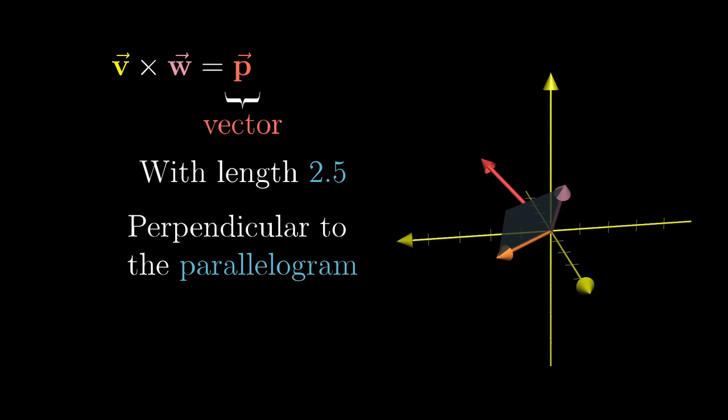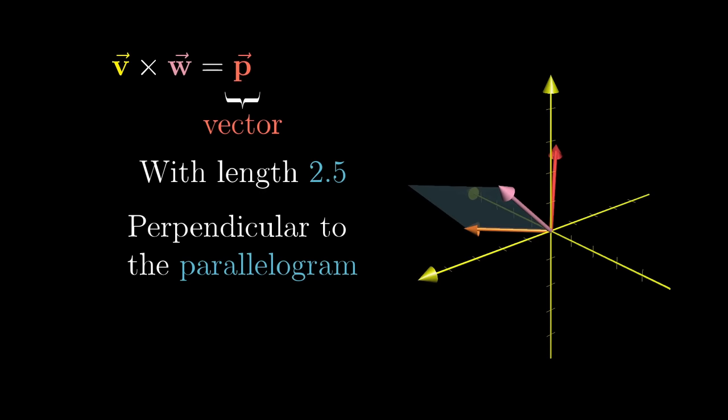But which way, right? I mean, there are 2 possible vectors with length 2.5 that are perpendicular to a given plane.